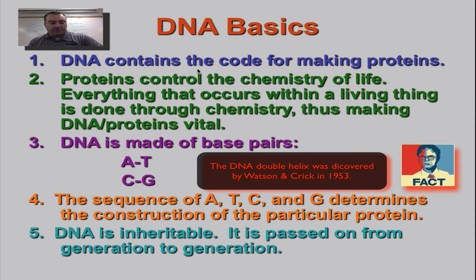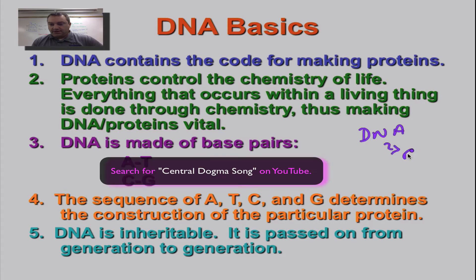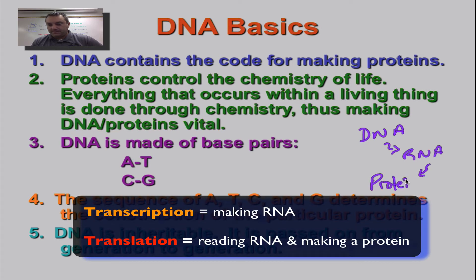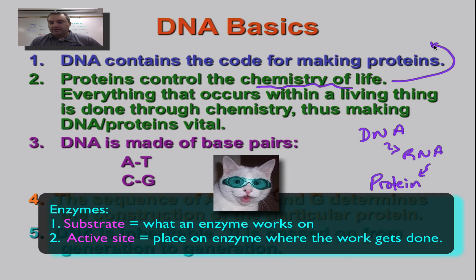If you can remember from the central dogma song, we had DNA to RNA and then RNA to protein. Remember the central dogma song — get this written right in here. This is the process of transcription, and that would be the process of translation. So DNA has the code for making proteins. Now proteins are really, really important because they control the chemistry of life, specifically the job of a protein being an enzyme.